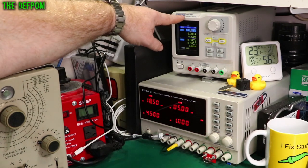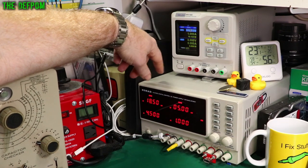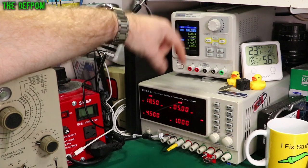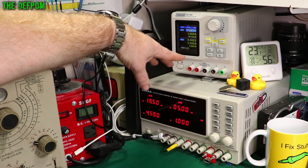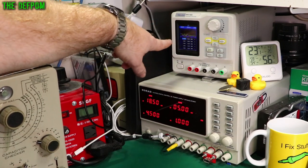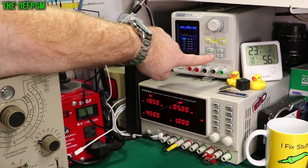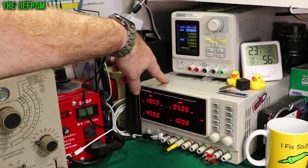This is my Siglent SPD 1168X, which is a 16 volt, 8 amp power supply. This has got different features. This is all controllable via software as well. You can use your computer to access it, look at graphing and that sort of thing. It does have graphing built in as well. When it's active, you can actually see what it's doing and it's got built in IP address stuff and controlling like that.